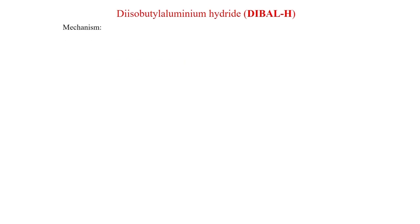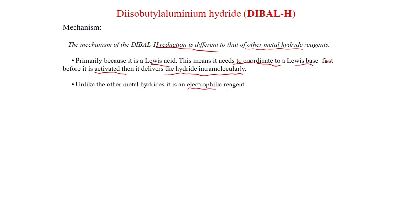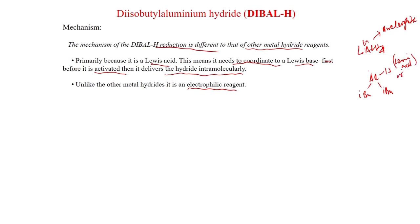Now we will discuss the mechanism of DIBAL-H reduction. The mechanism of DIBAL-H reduction is different from that of other metal hydride reagents, primarily because it is a Lewis acid — it needs to coordinate to a Lewis base first before it is activated, and then only it delivers the hydride intramolecularly. Unlike other metal hydrides, it is an electrophilic reagent. For example, lithium aluminum hydride has a negative charge on aluminum, making it a nucleophilic reagent. On the other hand, DIBAL-H is a Lewis acid and an electrophile.